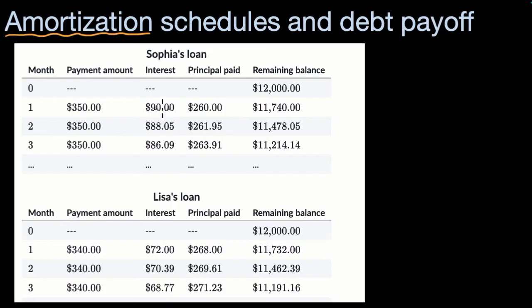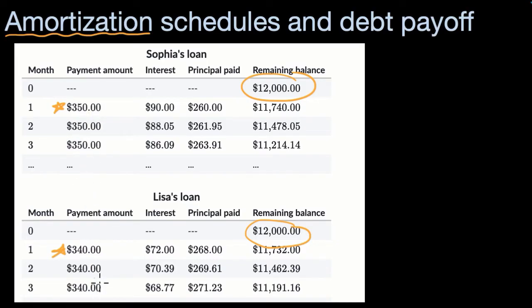Here's an example of two folks that each took out the same amount of debt — $12,000 — but they're making a slightly different payment. Sophia's making $350 a month, while Lisa is making $340 a month. What you're seeing here in these charts you could view as an amortization schedule. Even though they're paying a fixed amount each month, how much of that goes to interest versus how much goes to principal changes. In the first month of that $350 that Sophia's paying, $90 goes to interest and $260 goes to principal.